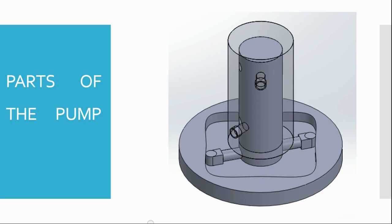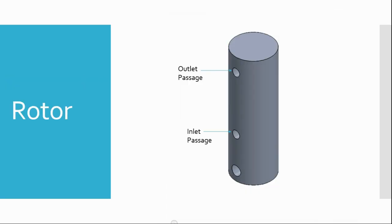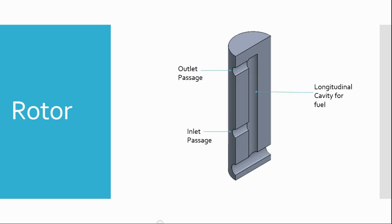Let's have a look at the various parts. There is a central longitudinal cavity in the rotor and a pair of radial holes at different heights. One hole is for fuel inlet and the other for fuel outlet.